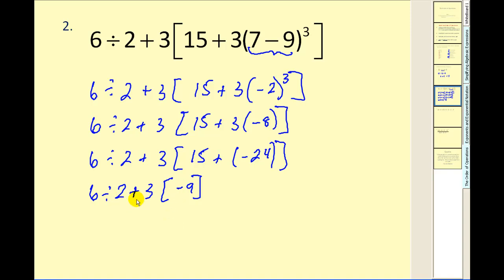Next step, we have division, addition, and multiplication. Multiplication and division take priority over addition, so we multiply and divide from left to right. Six divided by two gives us three, plus three times negative nine gives us negative twenty-seven. And then finally we end up with negative twenty-four. We're showing a lot of work here, but it's definitely worth it to make sure we get the correct answer.